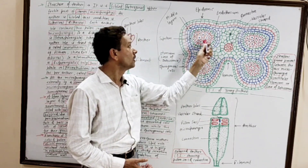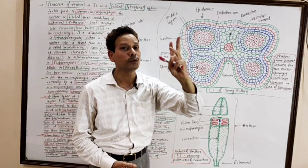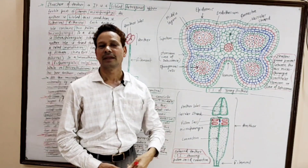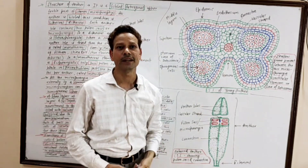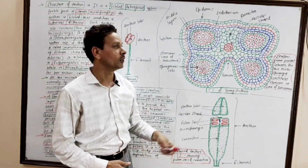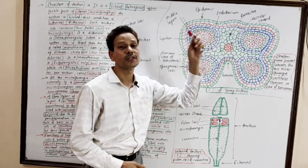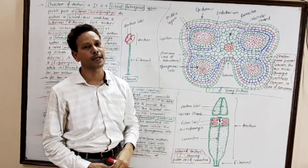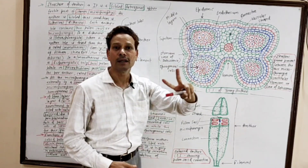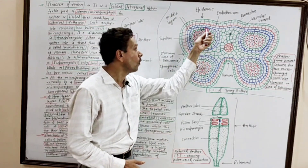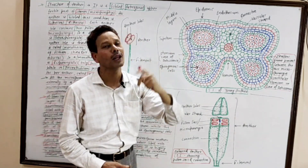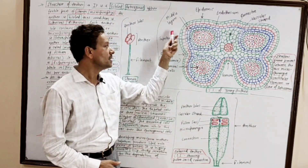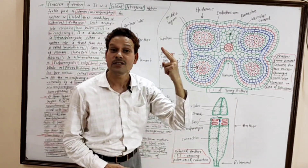The middle layer consists of one, two, or three layers. All these middle layers degenerate to provide nourishment to the sporogenous tissue — the pollen mother cells or microspore mother cells. The innermost wall layer of the pollen sac is the tapetum — very important. This innermost wall layer is the tapetum.